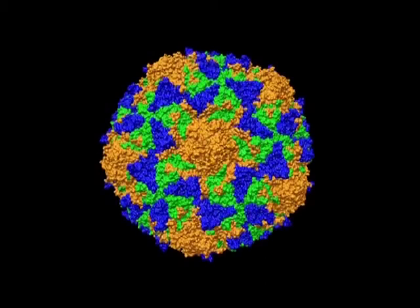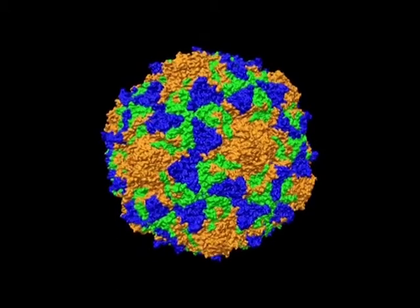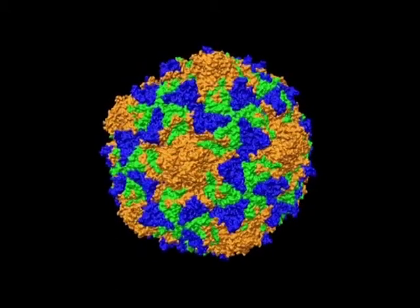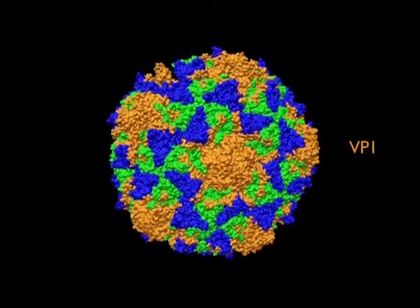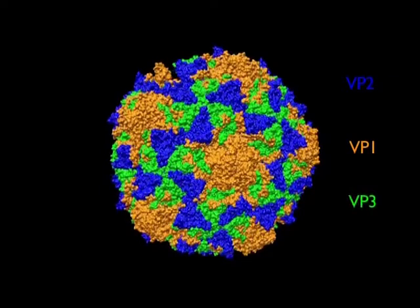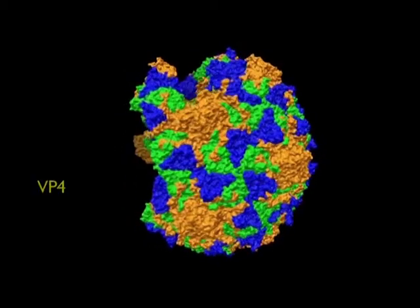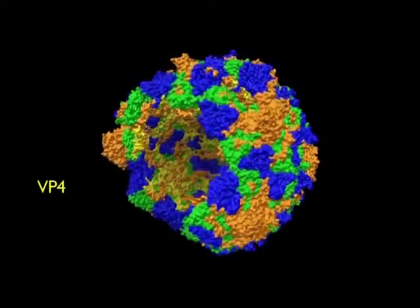This is the polio capsid at atomic resolution. We can see that it is composed of four structural proteins: VP1, VP2, and VP3 on the outer surface, and VP4, which lies on the inner surface.